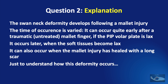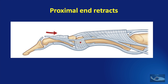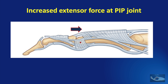Let us understand how this deformity occurs following a mallet injury. When there is injury to the terminal tendon inserting into the base of the terminal phalanx causing a mallet injury, the proximal end retracts and no longer transmits extensor forces. This causes slight proximal migration of the dorsal extensor expansion, so all extension forces now act at the level of the PIP joint.